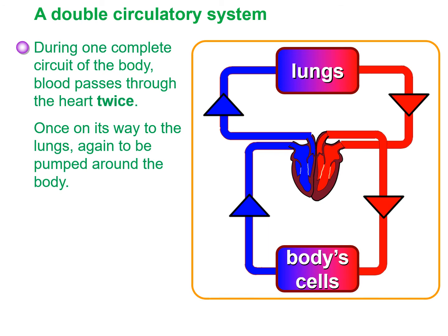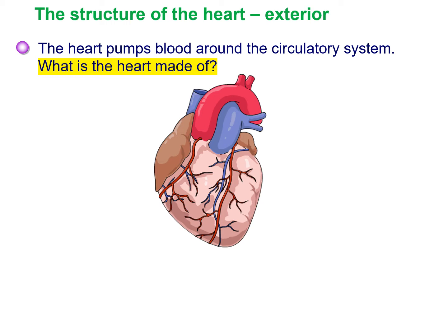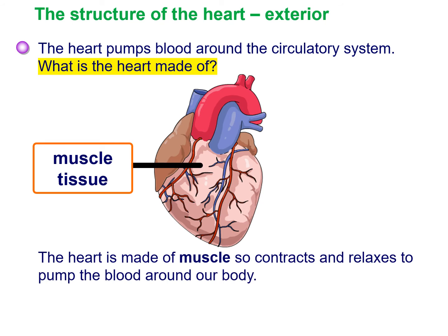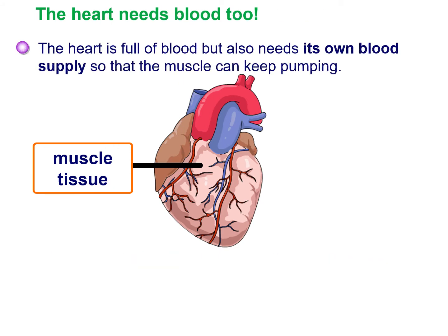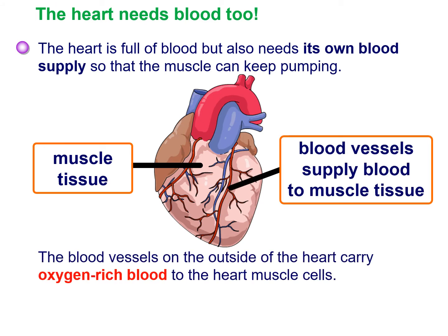The heart pumps blood around the circulatory system. What is the heart made of? Hopefully you realise the heart is made of muscle tissue, so it can contract and relax to pump blood around our body. Just like any muscle, it needs its own blood supply to get oxygen for respiration and glucose for that respiration, and to have waste products removed. The exterior of the heart has lots of blood vessels — arteries and veins — supplying the muscle tissue.